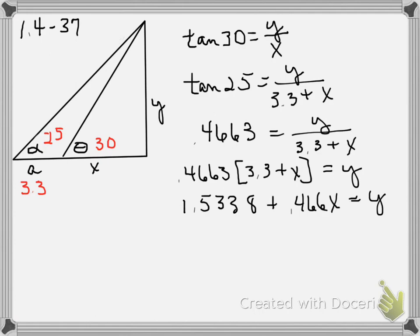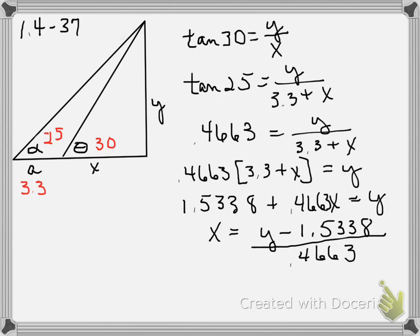I'm solving for x. So x is going to equal y minus 1.5338, then divide by the coefficient of x, 0.4663. Now I have an expression for x in terms of y, so we will take that to the other equation — tangent of 30 equals y over x — and substitute it.